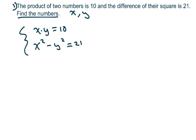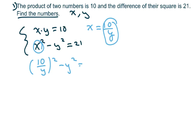And I have to find the numbers. So basically, I'm going to go ahead and solve for x here. You get x equals 10 over y and I'm going to substitute this into my x here. So I have 10 over y squared minus y squared equals 21.